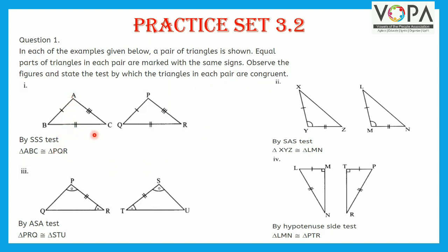Here, triangle ABC and triangle PQR are shown with the same sign. So you can see side AB congruent to side PQ, side BC congruent to side QR, and side AC congruent to side PR. Therefore, triangle ABC is congruent to triangle PQR by SSS test.